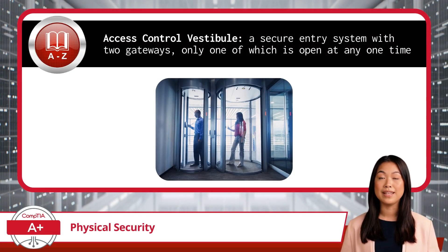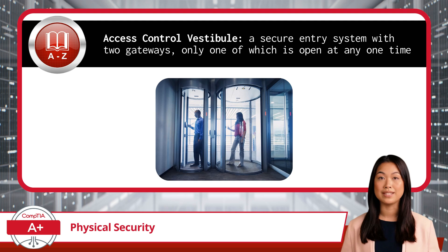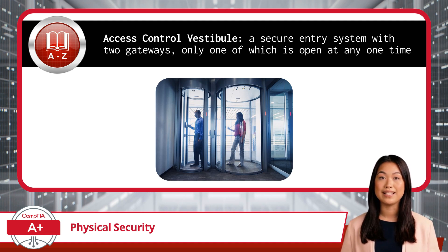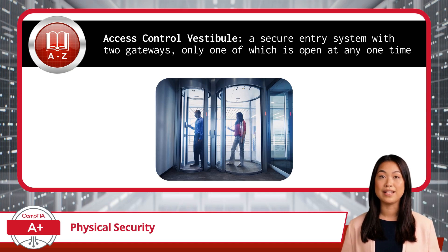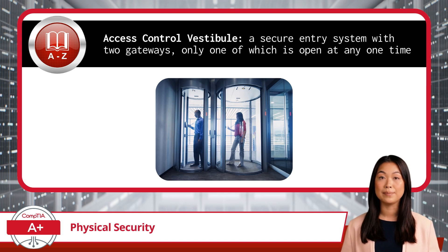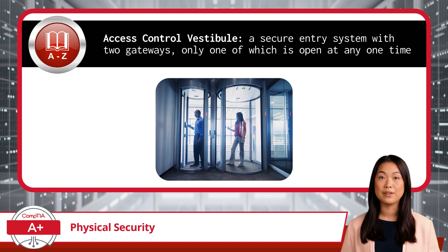First on the list of physical security devices is the access control vestibule, sometimes known as a man-trap. This is a secure entry system with two gateways, only one of which is open at any one time. This is your go-to solution for restricting access to sensitive areas like a data center. Picture it: you step into a small room, the door behind you locks, and now you need to authenticate — whether it's with a badge, a fingerprint, or even a retinal scan — before you can proceed. If everything checks out, you're allowed in; if not, you're stuck until security arrives. This setup is considered the best way to control physical access to critical areas because it ensures that only authorized personnel get through, and there's a clear record of everyone who does.